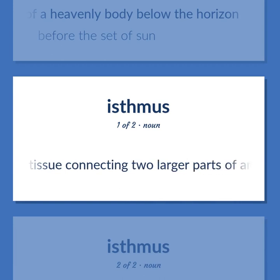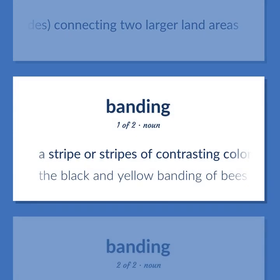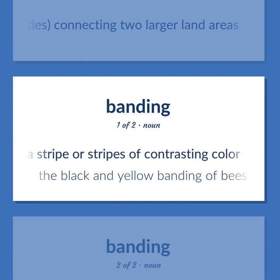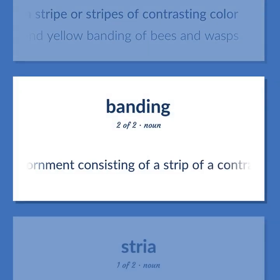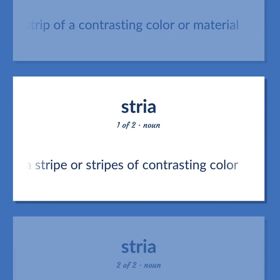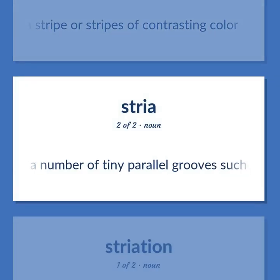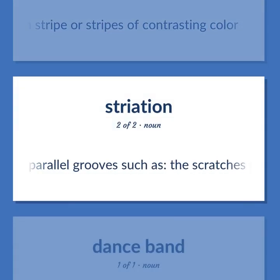A cord-like tissue connecting two larger parts of an anatomical structure. A relatively narrow strip of land with water on both sides, connecting two larger land areas. A stripe or stripes of contrasting color. The black and yellow banding of bees and wasps. An adornment consisting of a strip of a contrasting color or material. A stripe or stripes of contrasting color. Any of a number of tiny parallel grooves, such as the scratches left by a glacier on rocks or the streaks or ridges in muscle tissue.